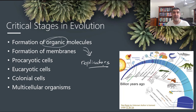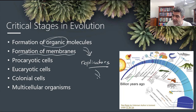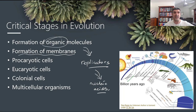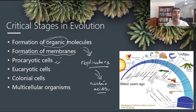In addition to these replicators, we had to have some sort of protection for them, so we had the development of membranes. The replicators, which are the nucleic acids, don't just replicate themselves — they also code for proteins. Proteins are part of this protective membrane around the body of the cell, creating a separation between external and internal environments. That led to our first types of actual cellular life: the first prokaryotic cells, very simple ones — the archaea and the bacteria that we think were at the beginning of this whole process.